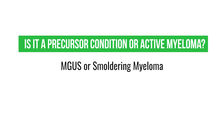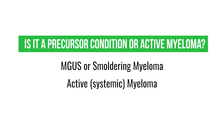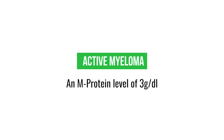When patients initially present with a plasma cell disorder, we characterize whether they have a precursor condition such as MGUS or smoldering myeloma, or systemic myeloma that requires treatment. The actual M protein level that technically defines myeloma is three grams per deciliter, but practically speaking, the level of that M spike protein alone is not sufficient to identify individuals who require treatment.